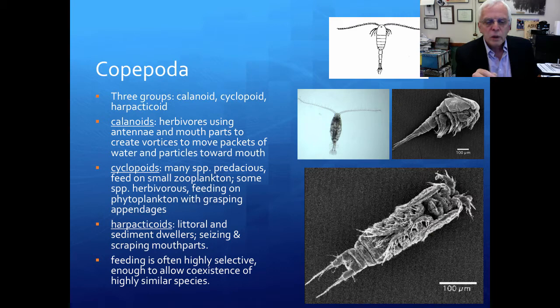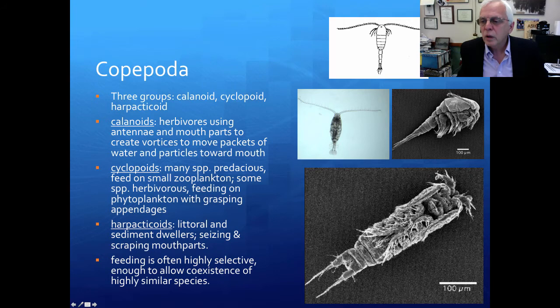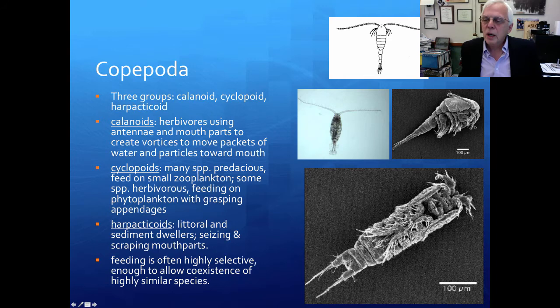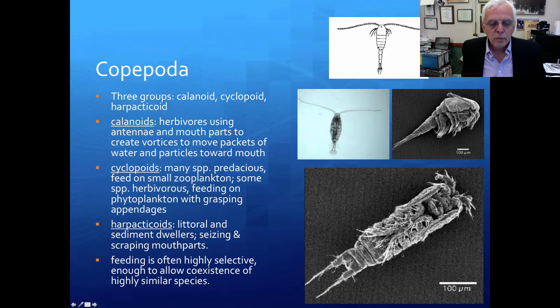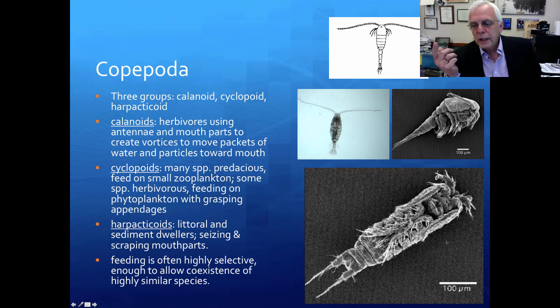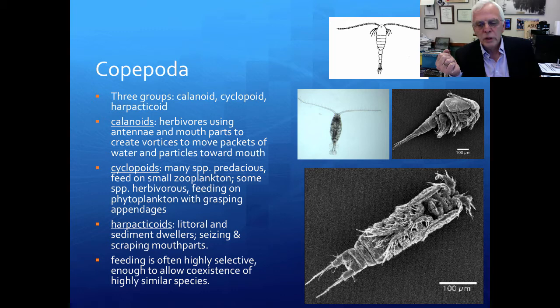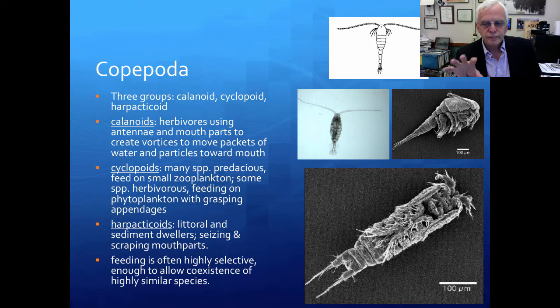The calanoids are herbivores, using their antennae and mouthparts to create vortices that move packets of water and particles toward the mouth. Because these are very small organisms, the water to them is rather viscous — much more like swimming in semi-set jello than in water. The cyclopoids are largely predators that feed on small zooplankton, though some species are herbivorous and I've seen them selectively graze on phytoplankton with their grasping appendages. The harpacticoids are mostly littoral and sediment dwellers with seizing and scraping mouthparts; they'll be bright blue or bluish-green in color and are oriented more toward substrata than a planktonic existence.